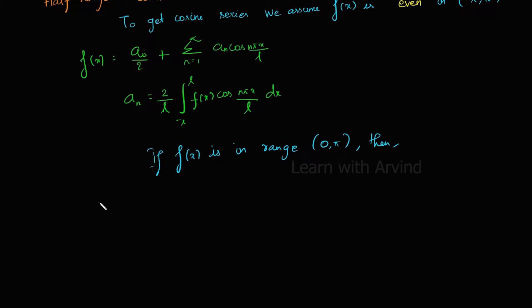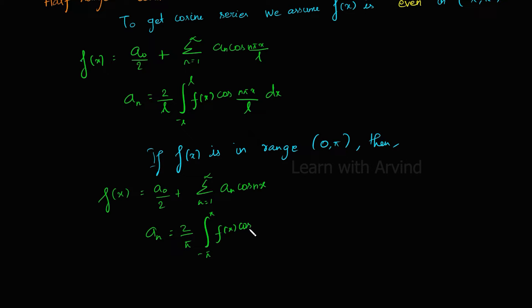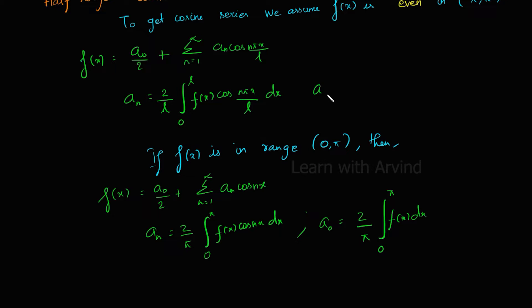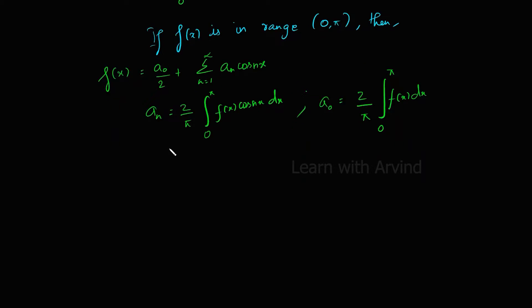then the half range Fourier cosine series is given by a₀ by 2 plus summation n equals 1 to infinity of aₙ cos(nx). The constant aₙ is equal to 2 by π times the integral from 0 to π of f(x) cos(nx) dx. Sorry — it's not minus L to L, it's 0 to L. It ranges between 0 to L and 0 to π. a₀ is equal to 2 by π times the integral from 0 to π of f(x) dx, and similarly a₀ equals 2 by L times the integral from 0 to L of f(x) dx in the range 0 to L.